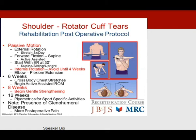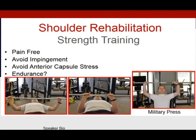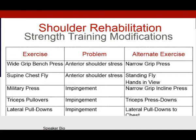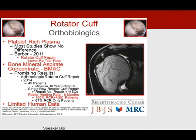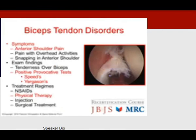Strength training should be pain-free; avoid impingement and anterior capsular stress — avoid the military press and substitute an incline press. Orthobiologics: most studies on platelet-rich plasma in the shoulder show no difference, except one 2011 study showing a lower re-tear rate. Adding bone marrow aspirate or mesenchymal cells showed a faster healing rate than rotator cuff repair alone, but human data is limited.